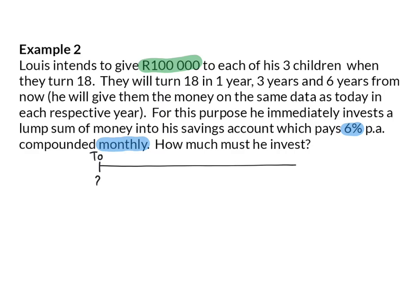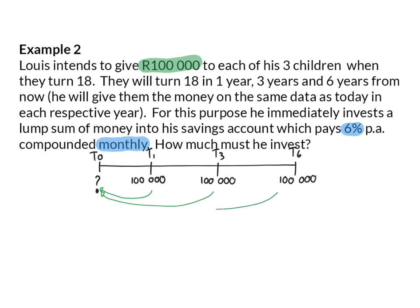Louis wants to invest a specific amount now to ensure that in one, three, and six years' time, he can give each of his three children 100,000 rand. This means that in one, three, and six years' time, he would want to save up 100,000 rand in this account so that he can withdraw it. This time, we want to determine — one by one — what the value of each of these amounts will be at T0.